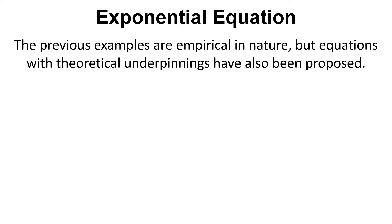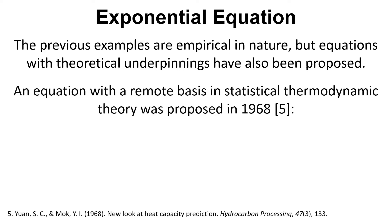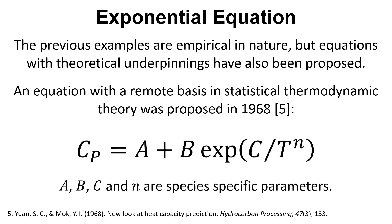These previous examples are all empirical in nature, but there are equations that have theoretical underpinnings. One example is an equation that has an exponential form, which has a remote basis in statistical thermodynamics and was proposed in 1968. It is of the form Cp equals A plus B times exponential of C divided by T to the power of N, where A, B, C, and N are species-specific parameters.